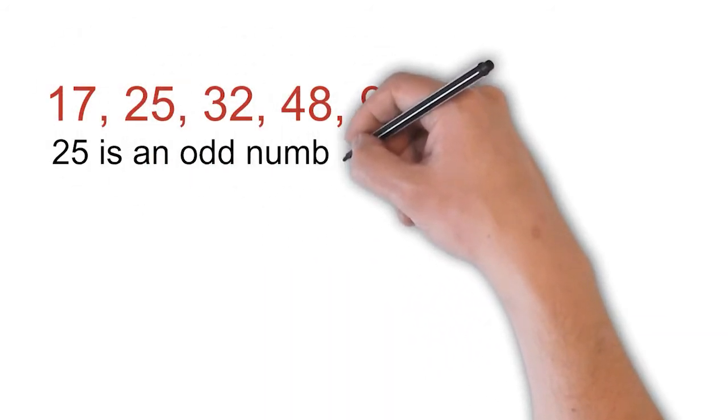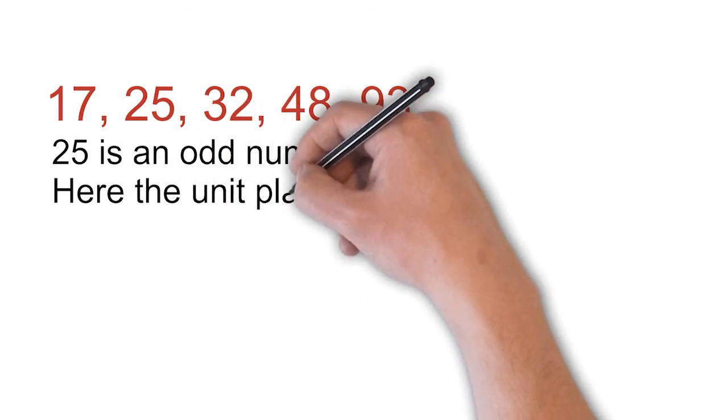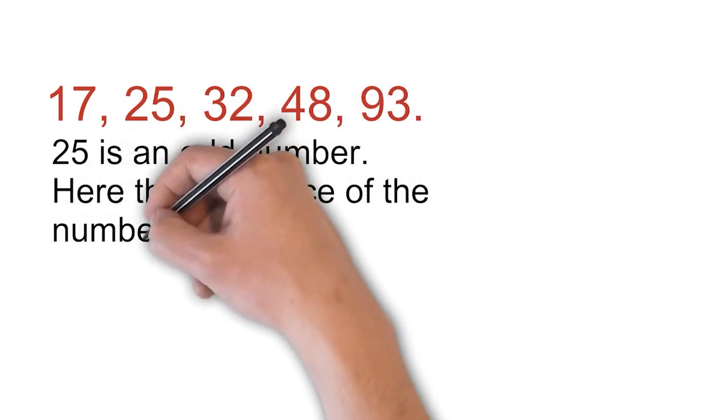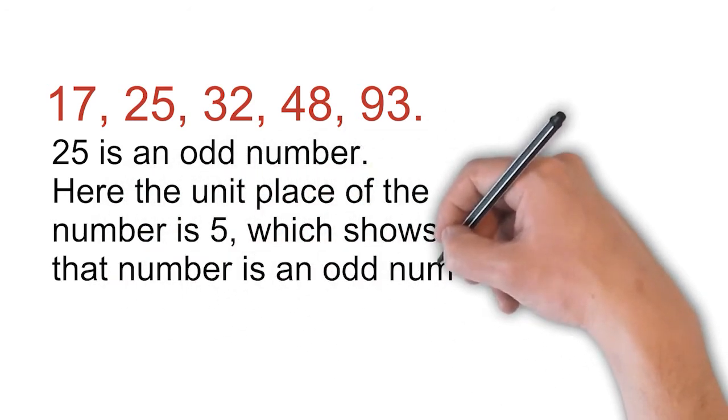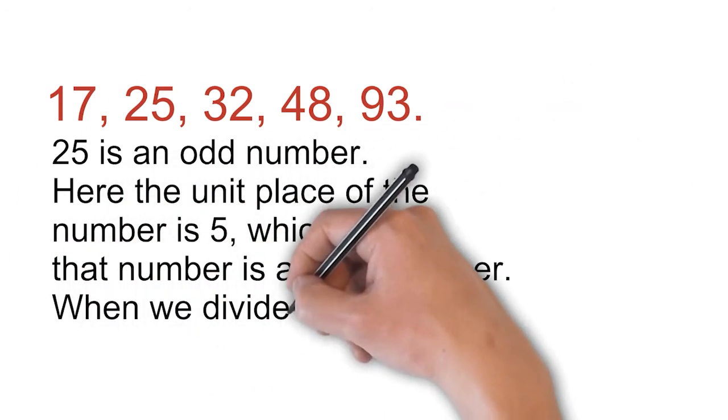25 is an odd number. Here, the unit place of the number is 5 which shows that the number is an odd number.